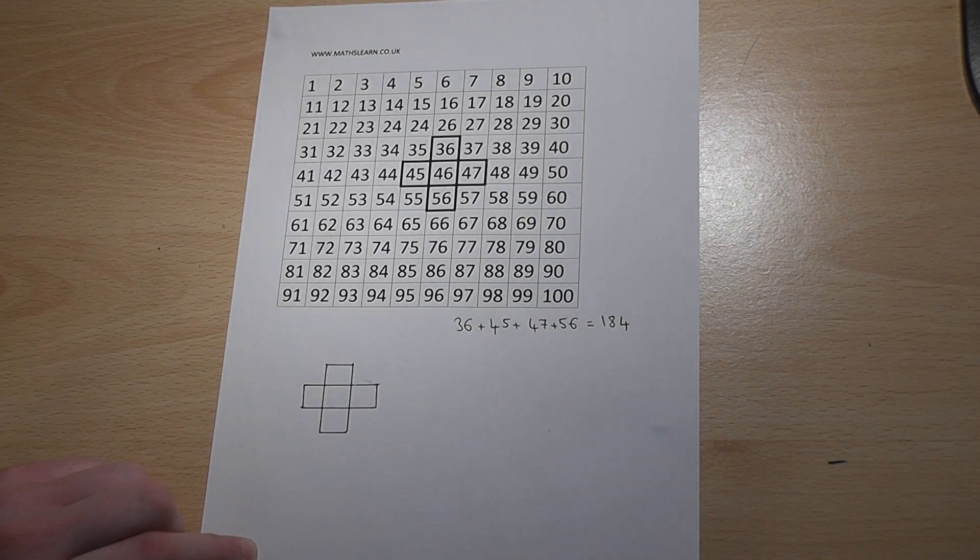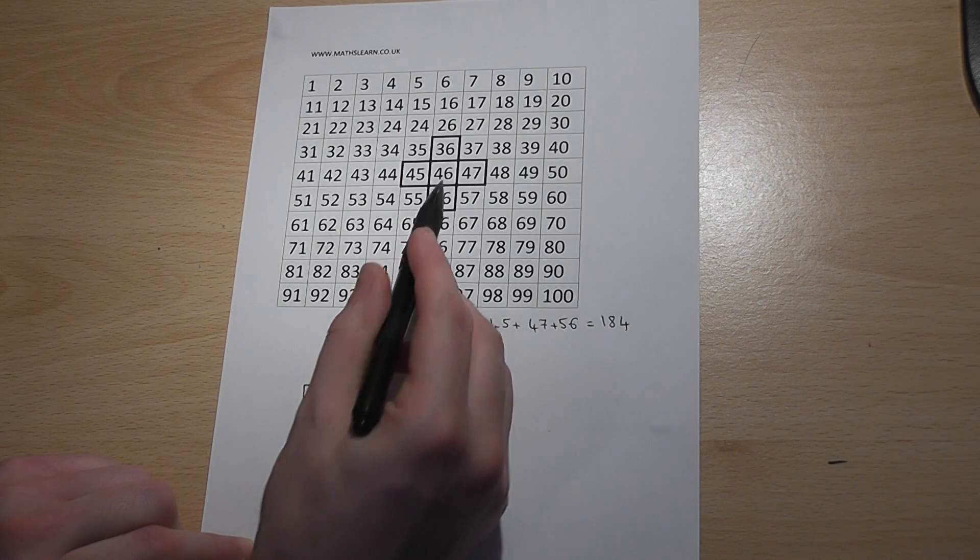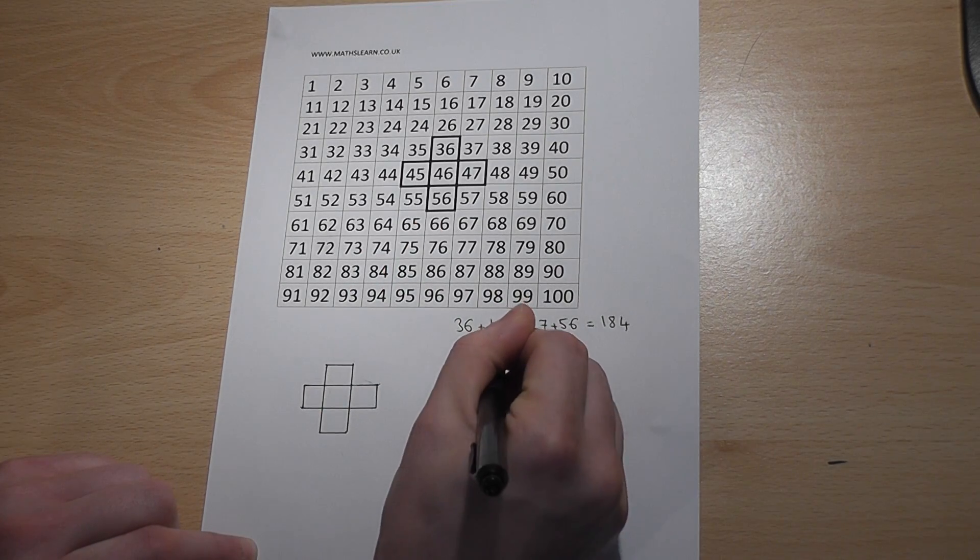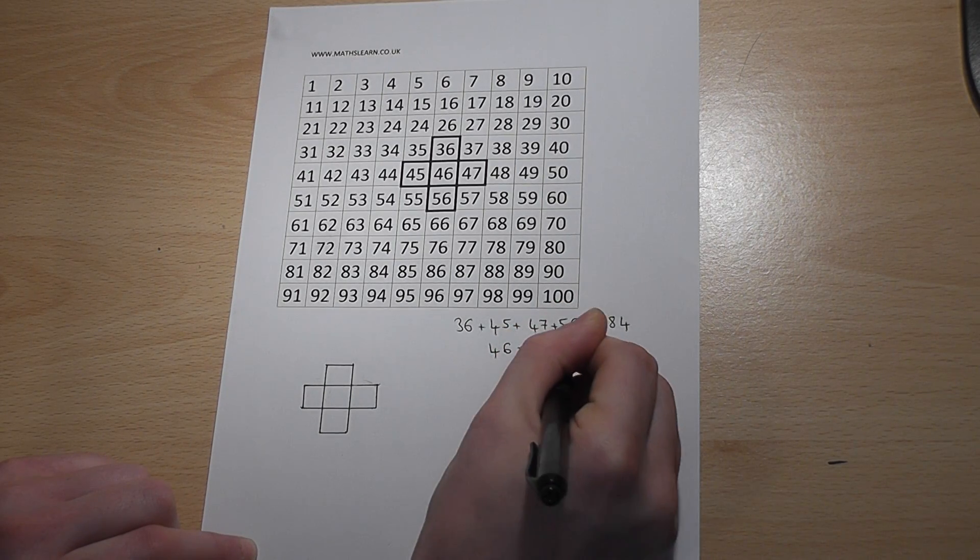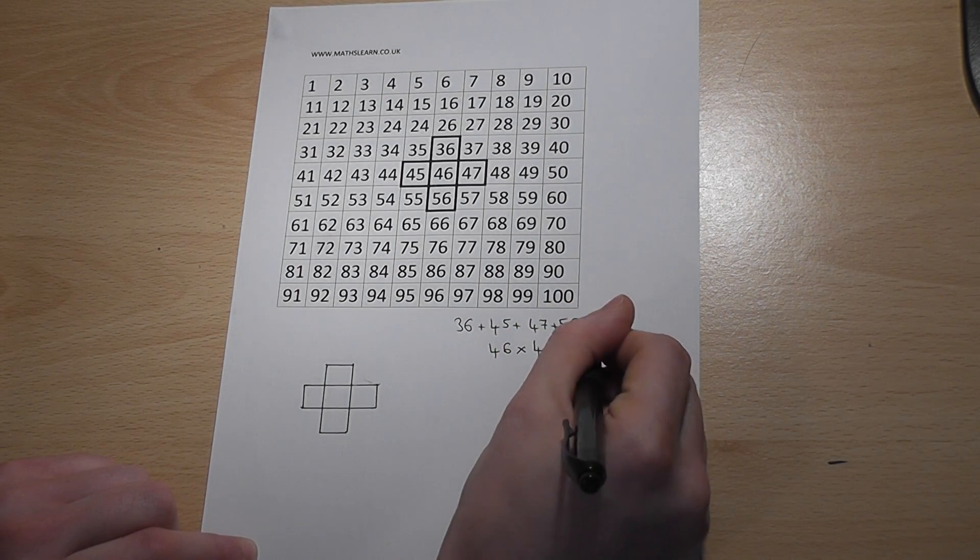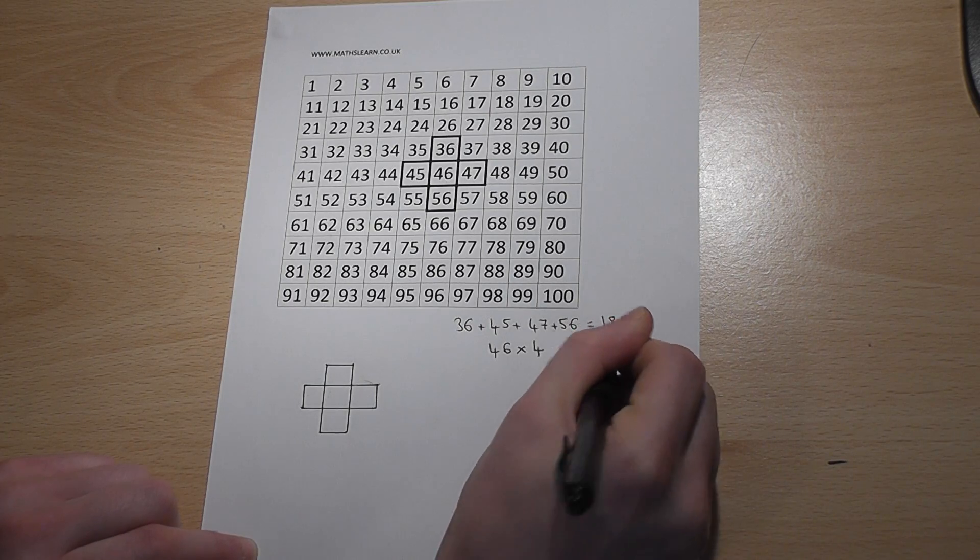Now interestingly enough, if you look at the centre number 46 and times that by 4, then we also get 184.